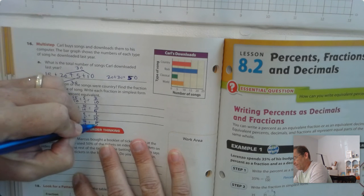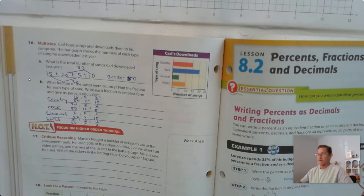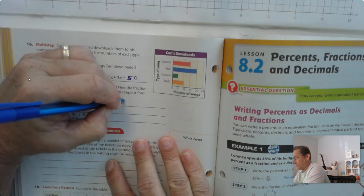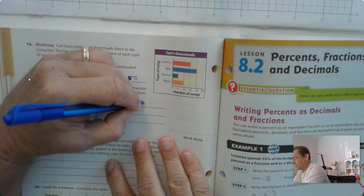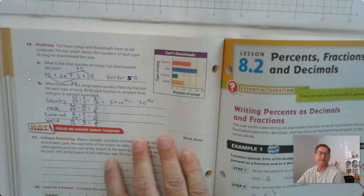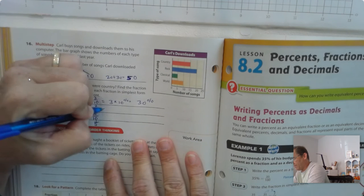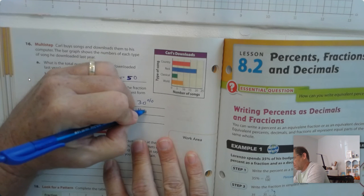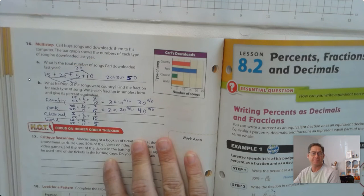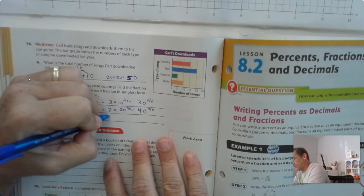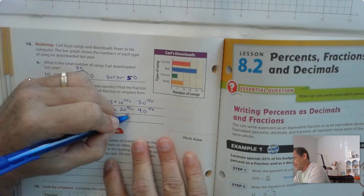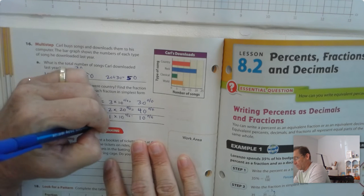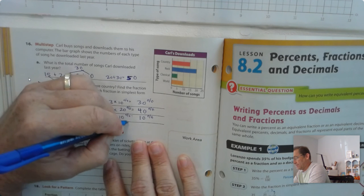So 3 tenths would be 3 times 10%, or 30%. 2 fifths is the same as 2 times 20%, so that would be 40%. 1 tenth is 1 times 10%. And finally, 1 fifth would be 1 times 20%.